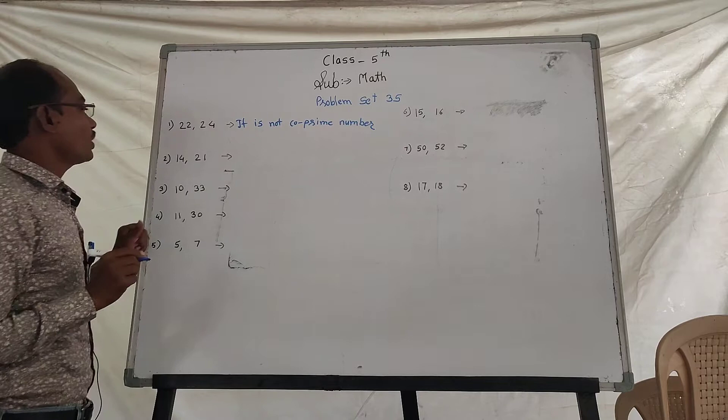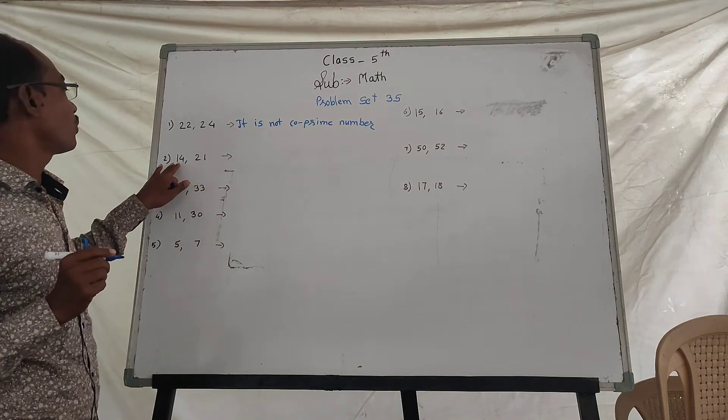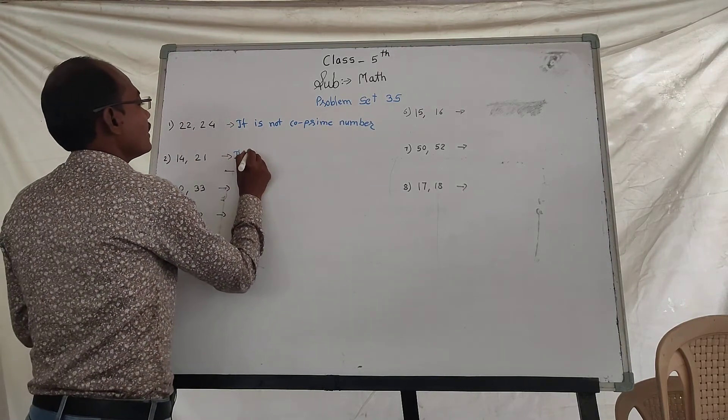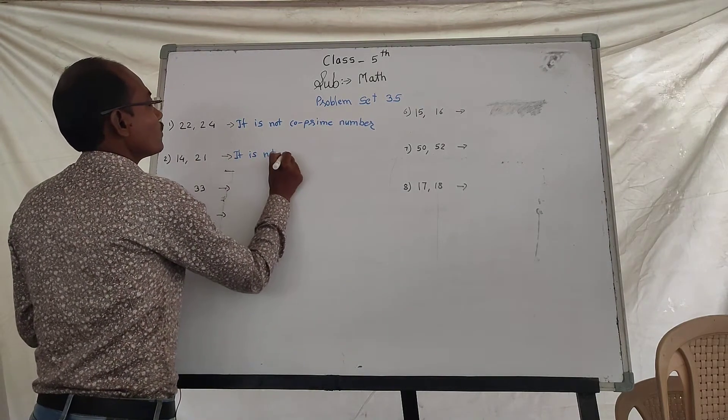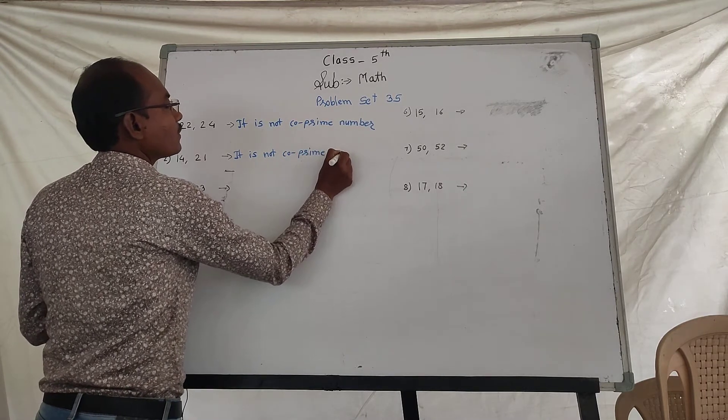Now second, 14 and 21, both divided by 7. In the 7 table, 14 and 21 are both divisible. They are not co-prime numbers.